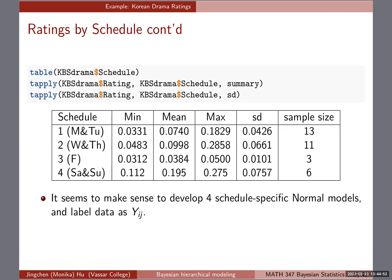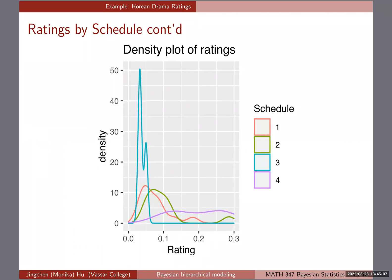The biggest takeaway is that there are clearly schedule-specific features going on. That prompts us to think about how to build a model — or a selection of models — that can capture the information shown in the data: not only that ratings differ across schedules, but also any unique within-schedule information.